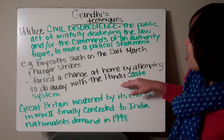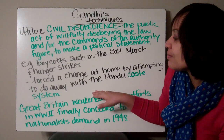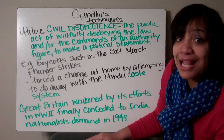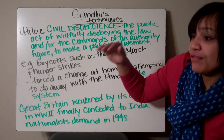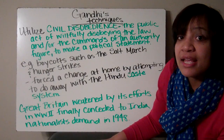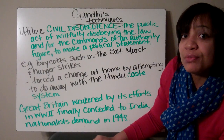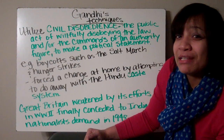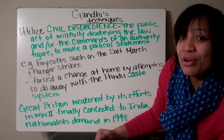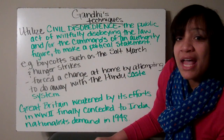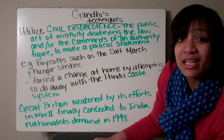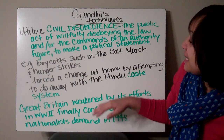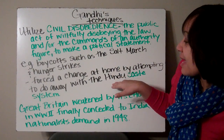He forced change at home by attempting to do away with the Hindu caste system. The caste system is a class system where you have priests at the top and slaves at the bottom — it wasn't a fair system and you couldn't move up. Depending on whether you were born in poverty, that's where you remained. Gandhi was actually born in the second level of the caste system, so he was doing well. He got an education but he did want to do away with the caste system. Hinduism is the form of religion they have in India.